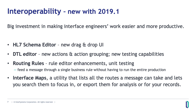You can feed a message through a single business rule without having to run the entire production. We've also added interface maps — a utility that lists all the routes a message can take and lets you search them to focus in, or export them for analysis or for your records.